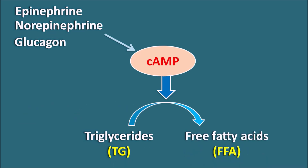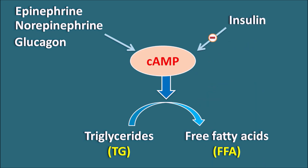In this way, the sympathetic system increases lipolysis, and glucagon can also increase lipolysis. On the other hand, insulin can inhibit lipolysis. Insulin is going to inhibit the cyclic AMP activity, thereby inhibiting the conversion of triglycerides into free fatty acids. So today in this video let us see how cyclic AMP converts triglycerides into free fatty acids.